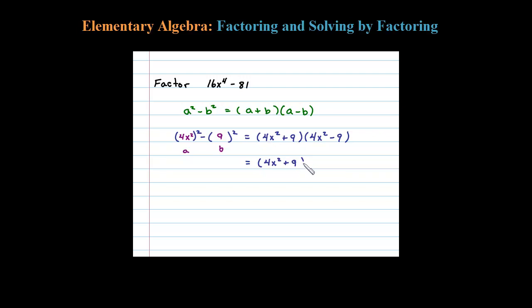Now looking at 4x squared minus 9, we have to determine what a and b are. So a is 2x—2x squared is 4x squared—and b is 3. So we have (a + b) times (a - b), where a is 2x and b is 3.